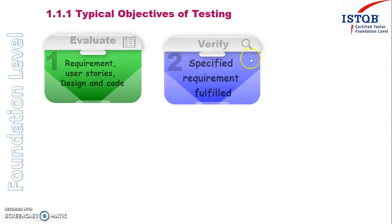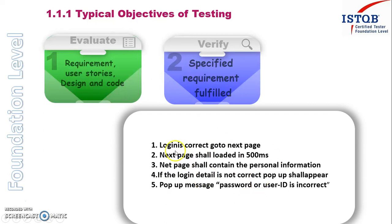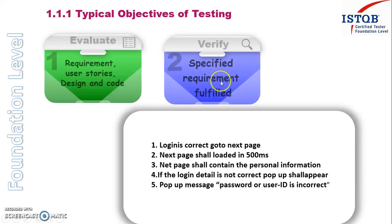The second objective is to verify whether the specified requirement is fulfilled or not. We asked questions to the customer and they provided answers. So according to that, we developed the requirement — for example: if login is correct, go to the next page; the next page shall load in 500 milliseconds; the next page shall contain personal information; if login detail is not correct, a popup will appear with the message 'password and user ID is incorrect.' Now we verify whether we are fulfilling all five requirements given by the customer by looking at the documents and work products. That is the verification stage.